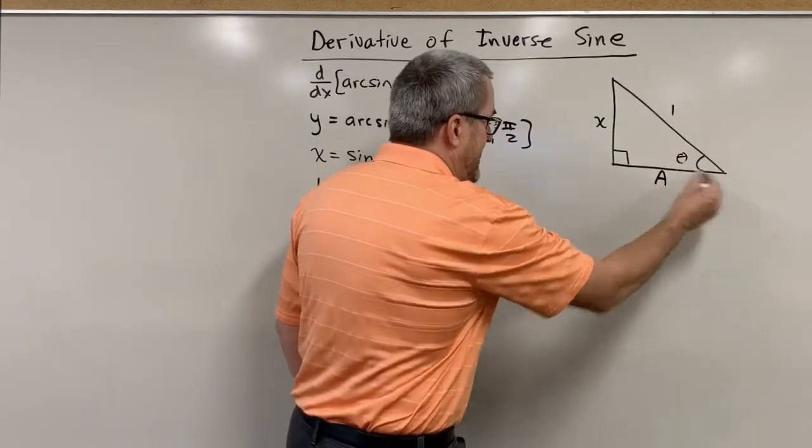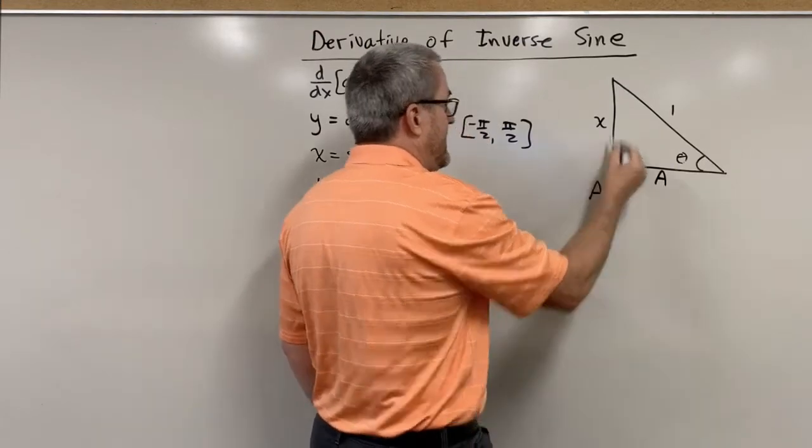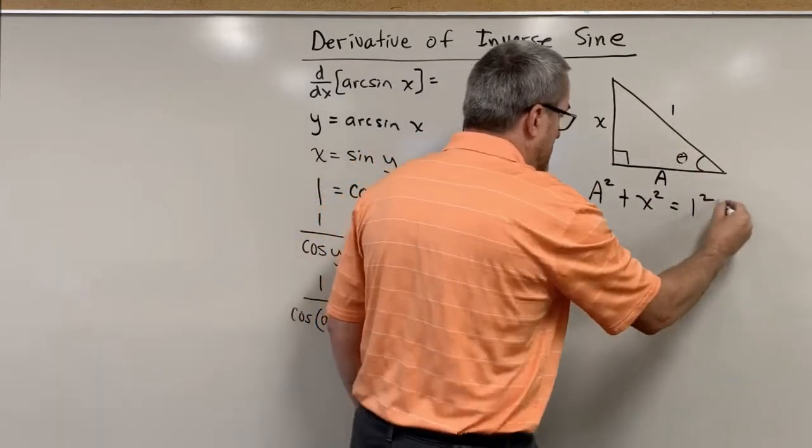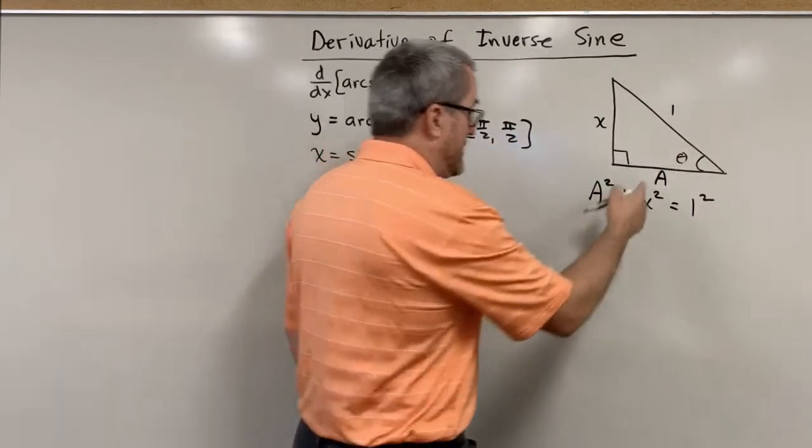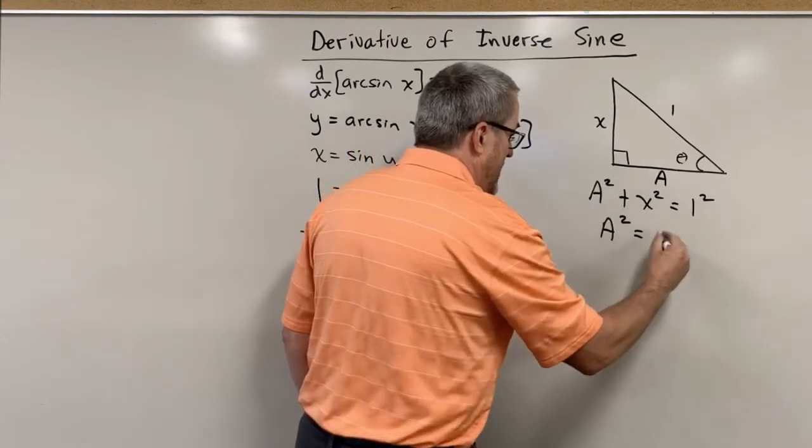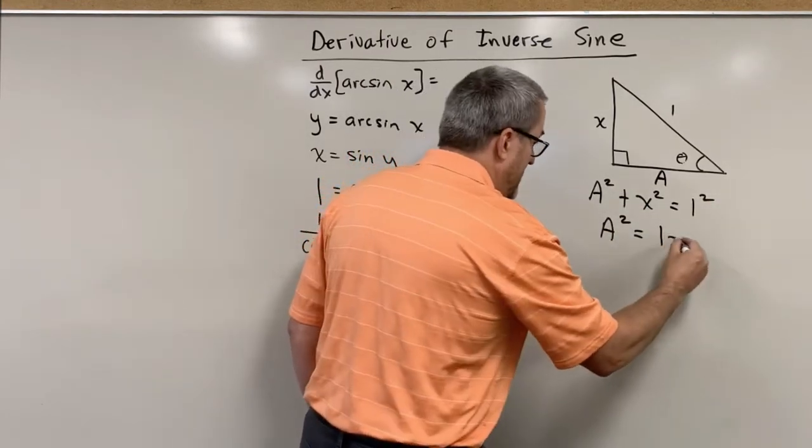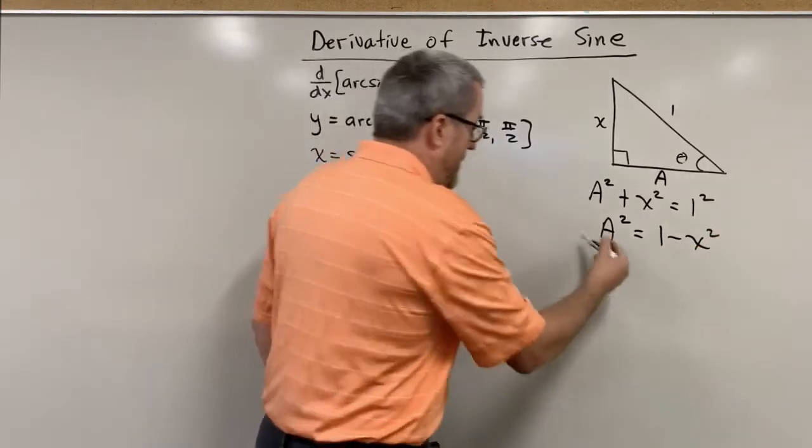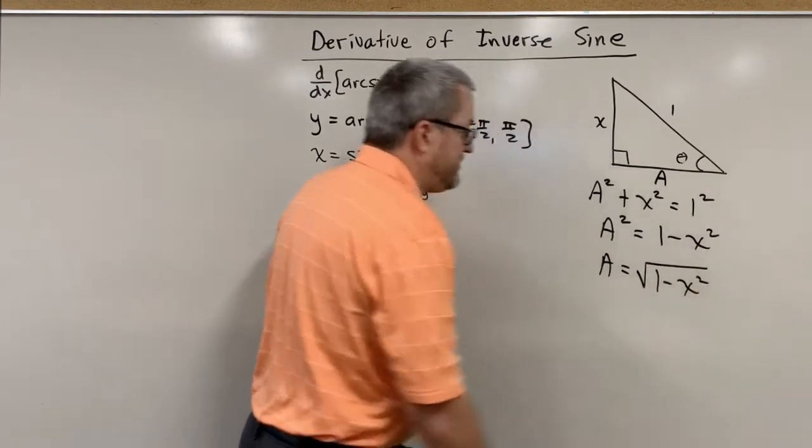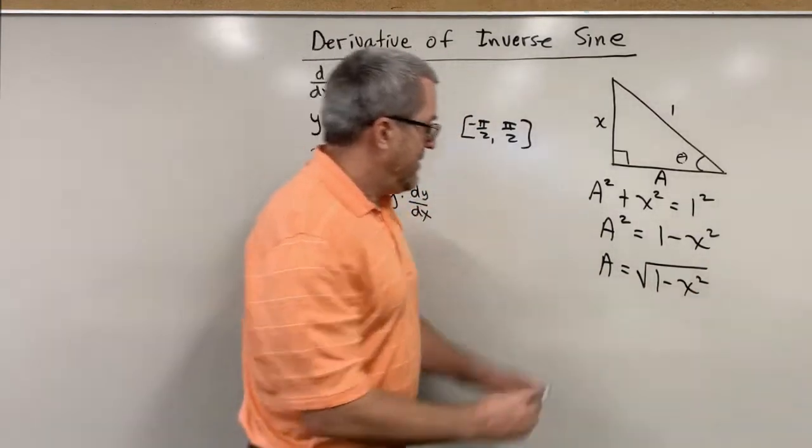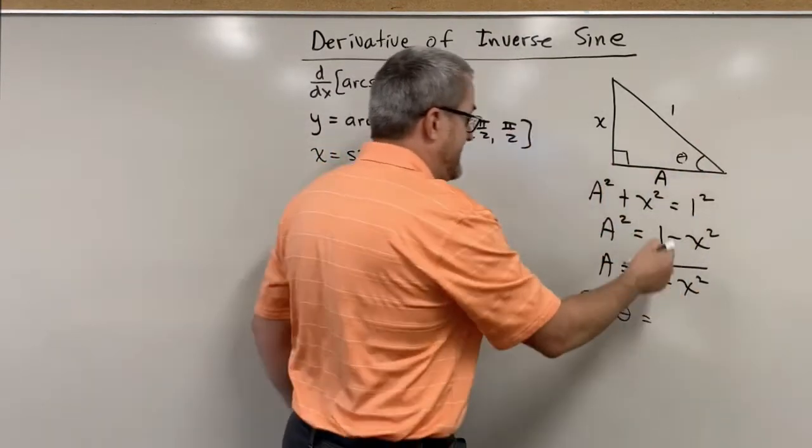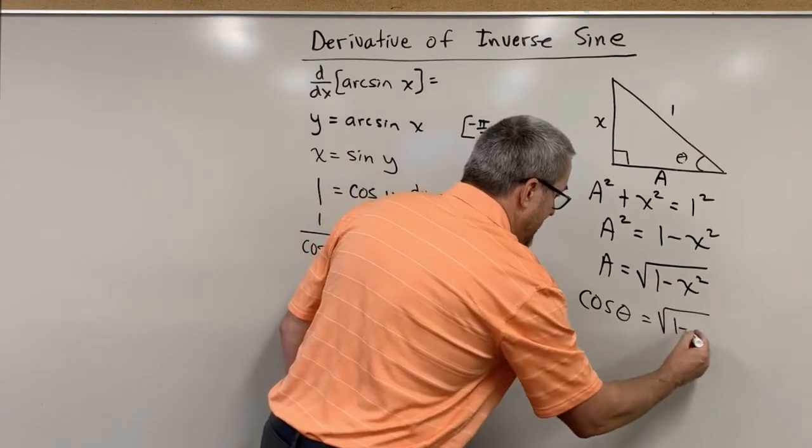Pythagorean theorem would dictate that this leg squared plus this leg squared is equal to this hypotenuse squared. So that adjacent side squared, algebraically speaking, is 1 squared or 1 minus x squared. And therefore, that adjacent side is the square root of 1 minus x squared. So the cosine of that angle theta is that adjacent side, the square root of 1 minus x squared.